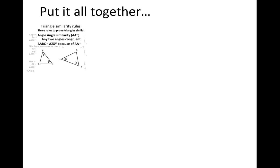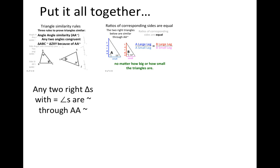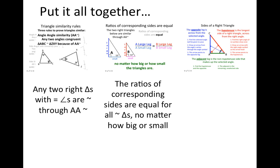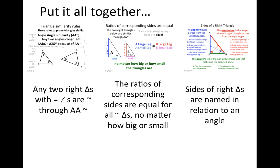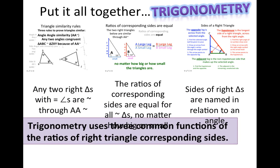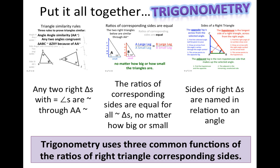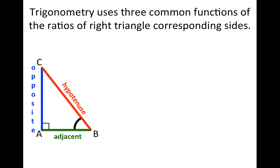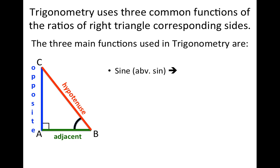We're putting together the rules of similarity — especially angle-angle — the ratios of corresponding sides are equal no matter how big or small, and the sides of a right triangle named in relation to an angle. Put all that together and you get trigonometry. Trigonometry uses three common functions of the ratios of right triangle corresponding sides. Here is a right triangle with our three sides. The three main functions used in trigonometry are sine, abbreviated SIN, and sine is the ratio of the opposite over the hypotenuse.